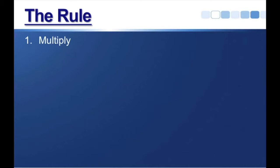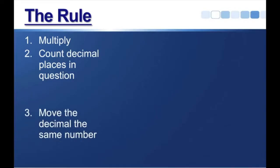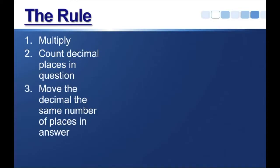Step one is just multiply. Multiply like you normally would. Number two, count the decimal places in the question. Step three, move the decimal the same number of places in the answer.